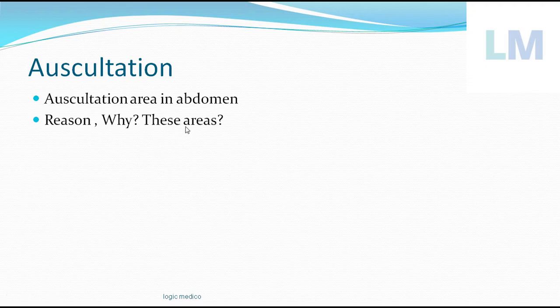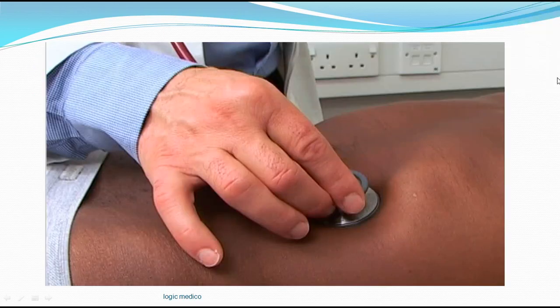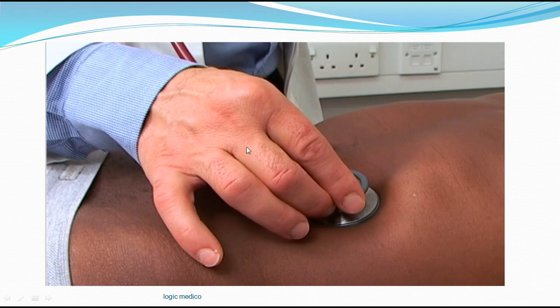The patient is explained the procedure and asked to lie down supine. Before auscultating, we have to inspect — that is, see the area of the abdomen — then palpate for any tender areas, starting from non-tender areas. Then we percuss the abdomen, and the last step is auscultation.